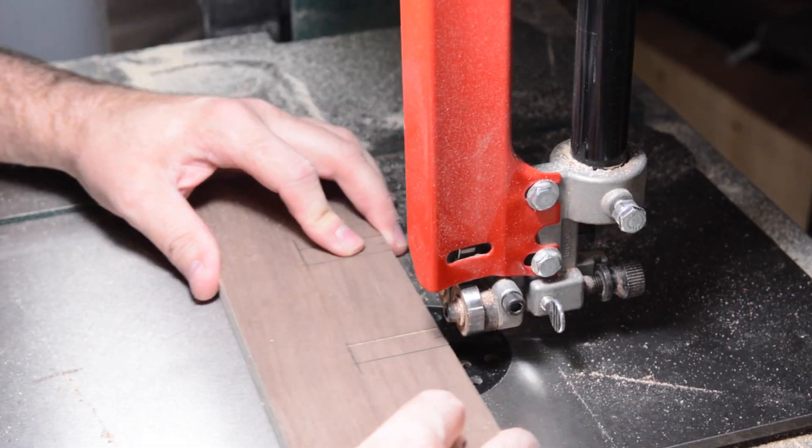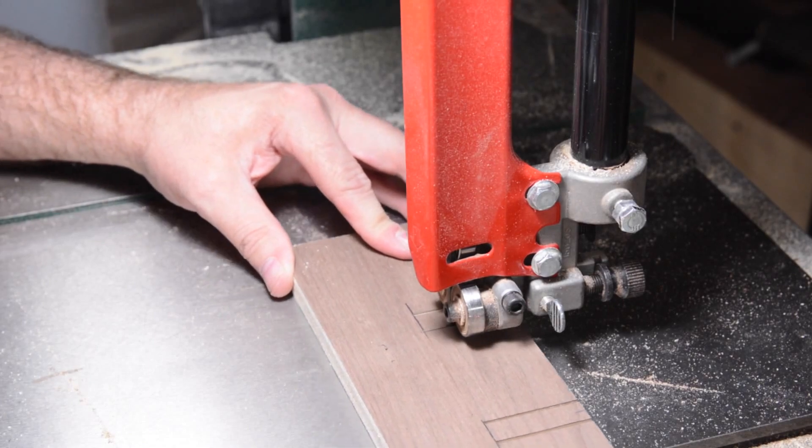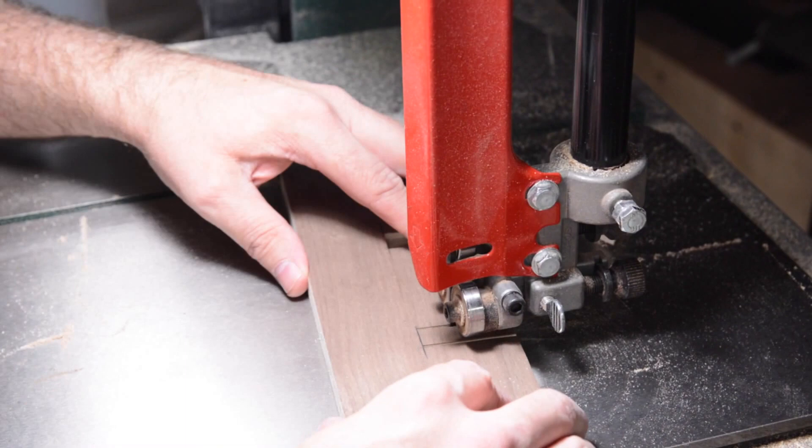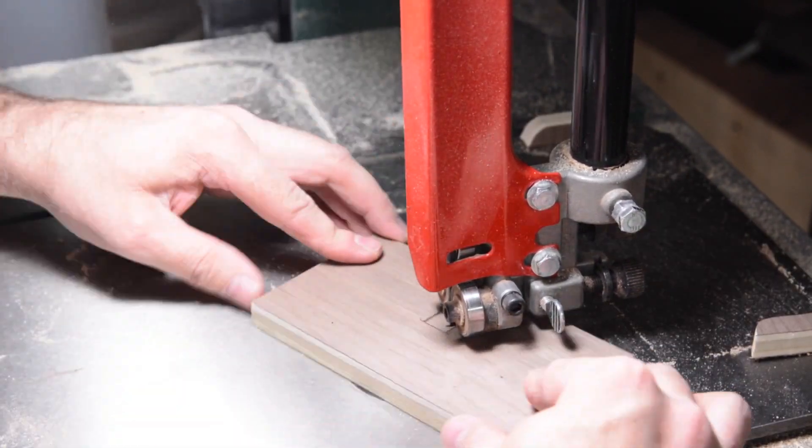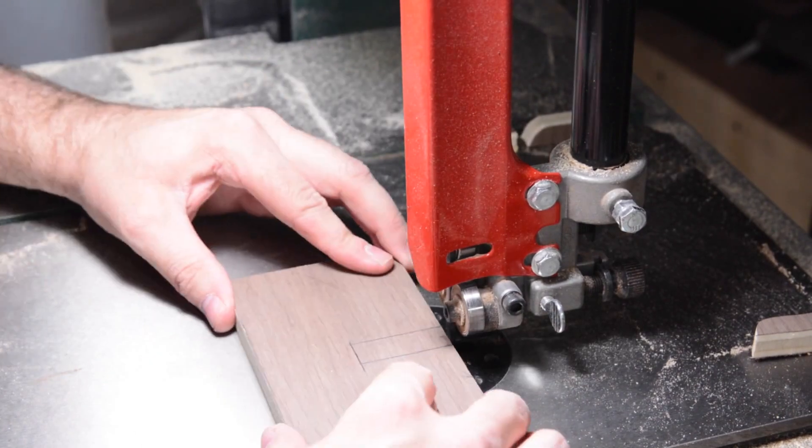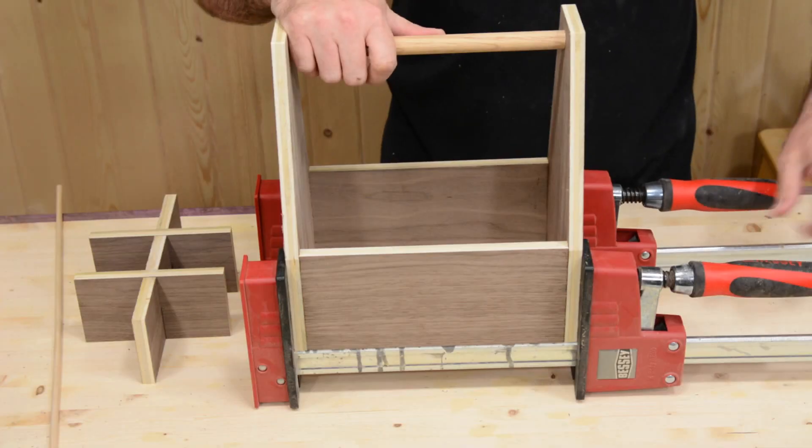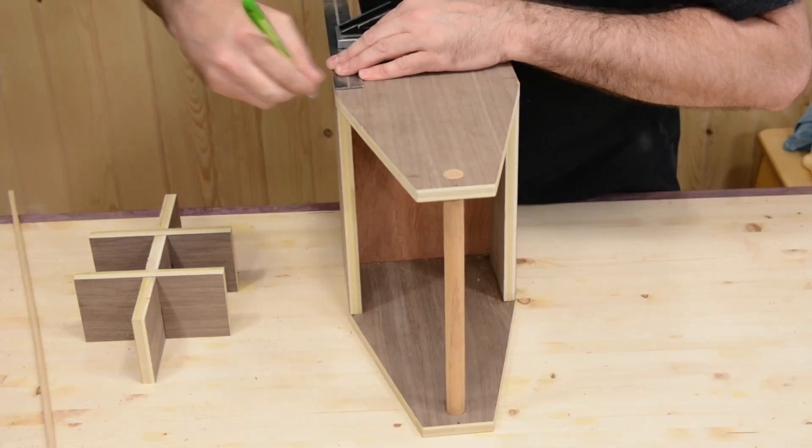The bandsaw makes quick work of cutting out the notches. And now we mark and drill the holes for the dowels.